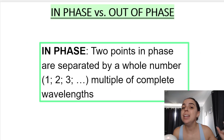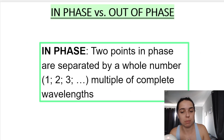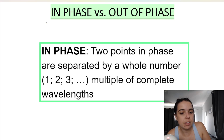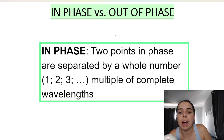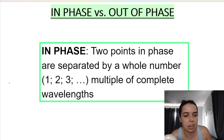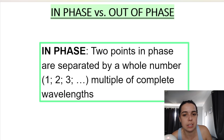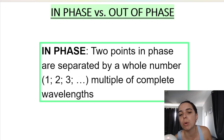Let's go into more detail about what in phase and out of phase means. Two points are in phase when they are separated by a whole number of complete wavelengths. Out of phase is when they are separated by more than a whole number, like 1.5 wavelengths or something like that.